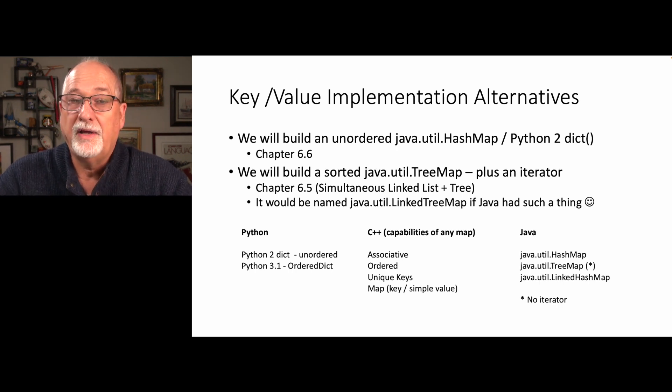We're going to have a map that is sorted, that's more like Java's tree map, with an iterator. And it is sort of chapter 6.5, or section 6.5 of the book. And it is a combination of a tree map and a linked list map. But Java doesn't have such a thing, which really kind of surprises me. They've got a tree map and they've got a hash map, but they don't have a linked tree map, or a linked map.